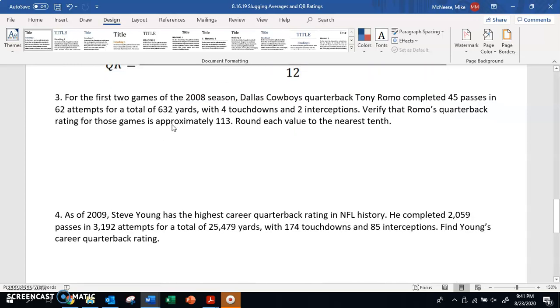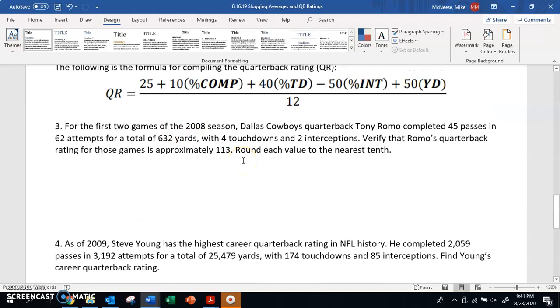As an example, for the first two games of the 2008 season, Dallas Cowboys quarterback Tony Romo completed 45 passes in 62 attempts for a total of 632 yards, four touchdowns, and two interceptions. Verify that Romo's quarterback rating for those games is approximately 113. Round each value to the nearest tenth. First thing I want to do, I want to find each of these percentages. I'm going to do that using the info that it gives us. For percentage completion, that's just completed passes, 45, divided by attempts, 62.